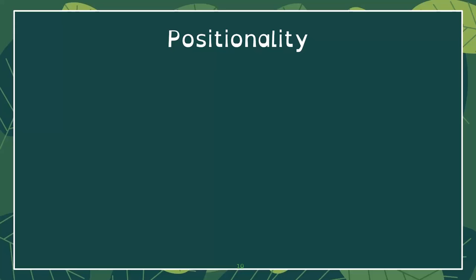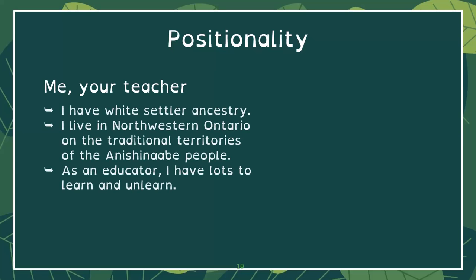I believe it's important to position myself within the context of my educational experience to help be accountable to how my understanding of education shapes how I teach. I have white settler ancestry and white privilege, and this shapes how I have experienced education — it has made education easier with fewer barriers because I am white. This means I can get trapped in the belief that the white way, the way I learned, is the only perspective of methods, pedagogy, and concepts.